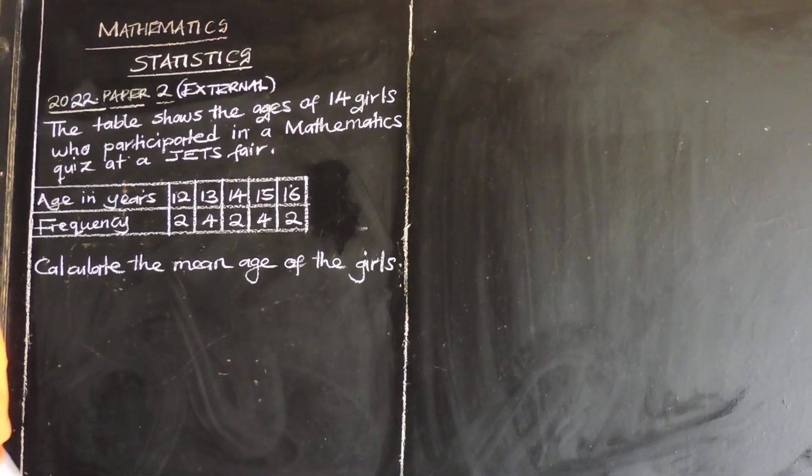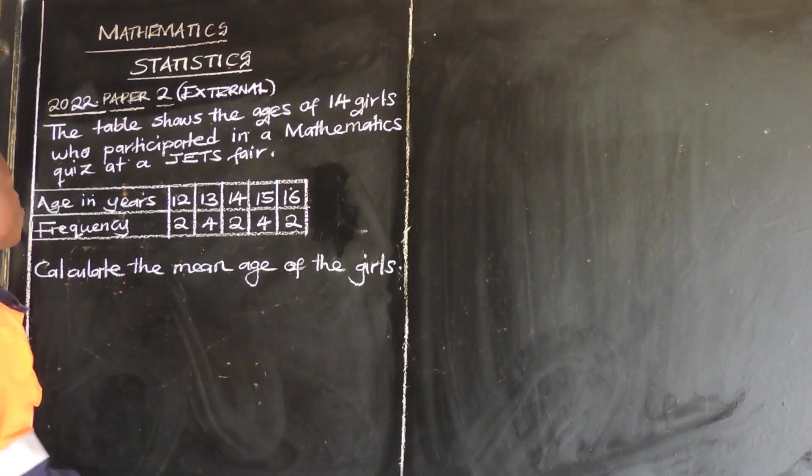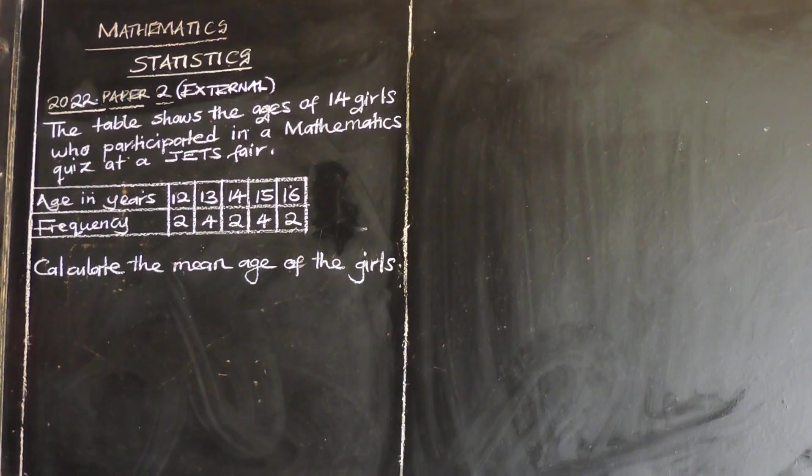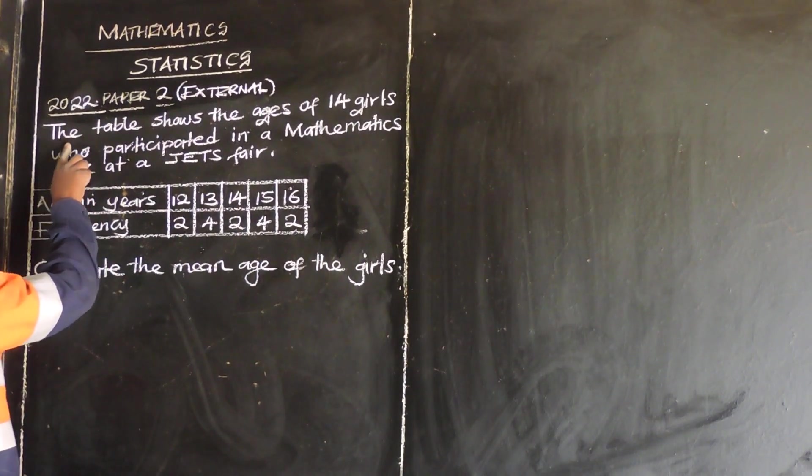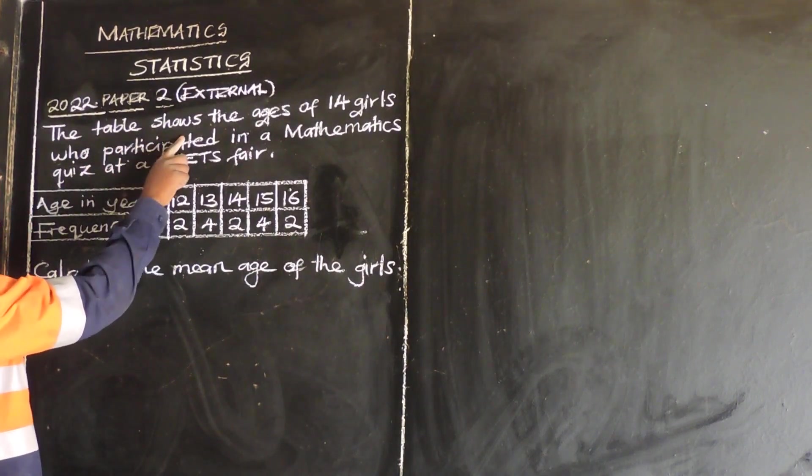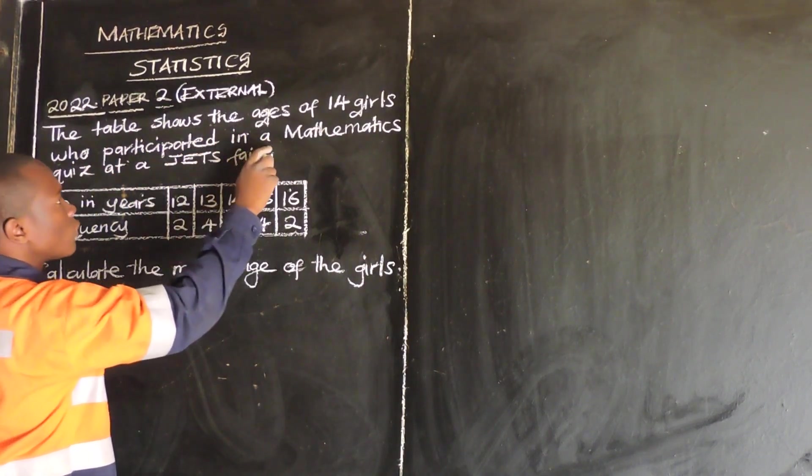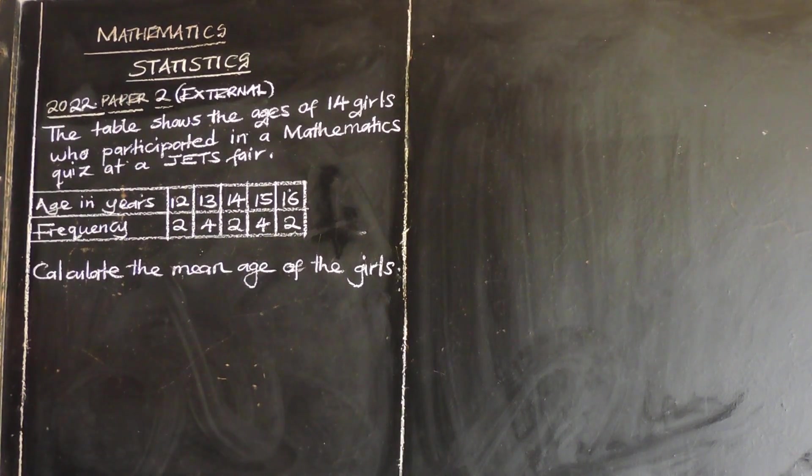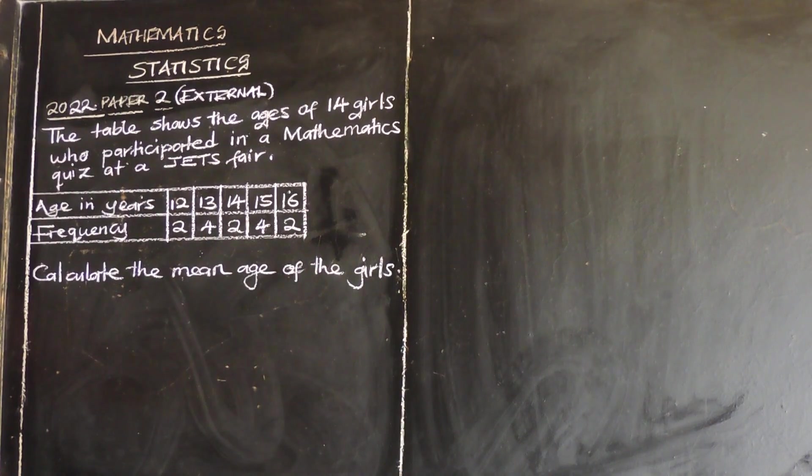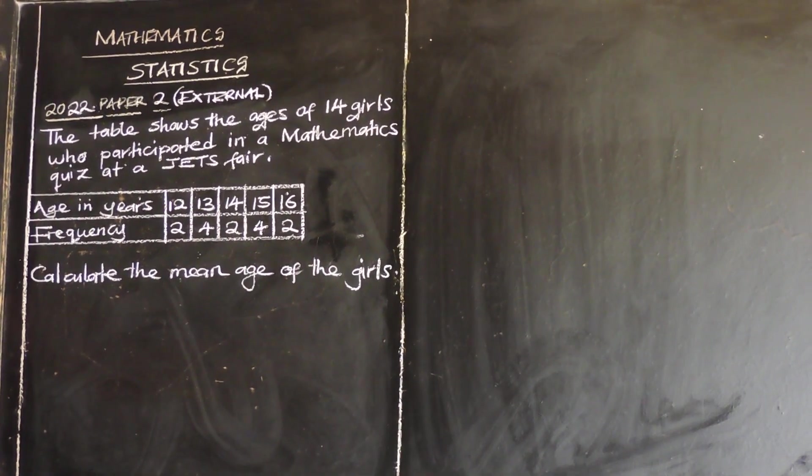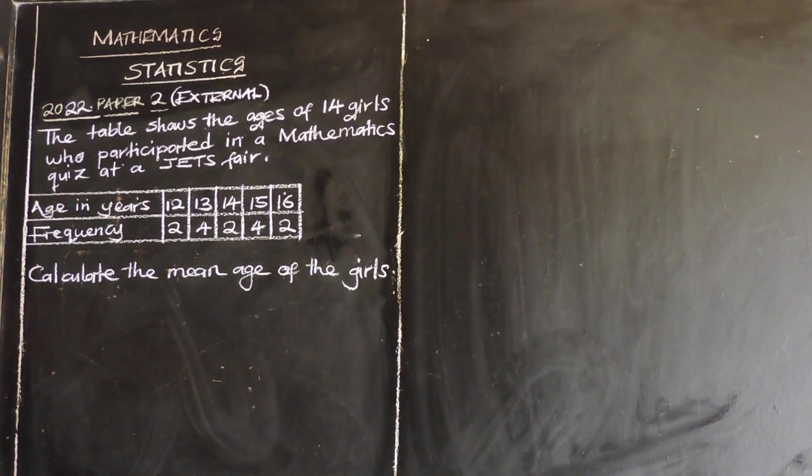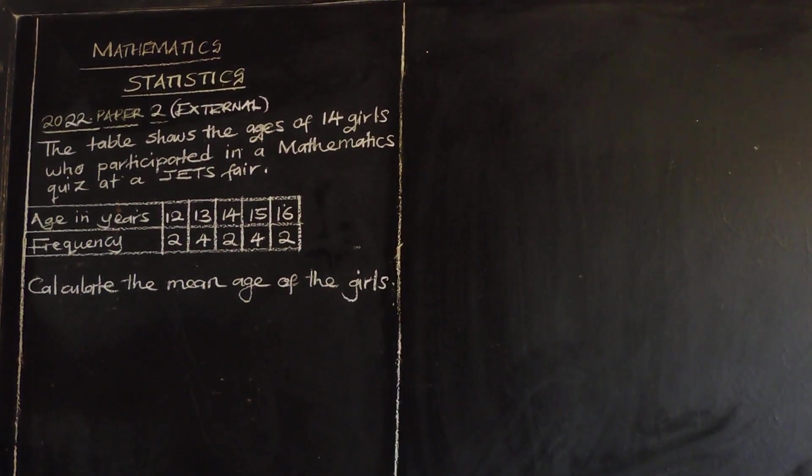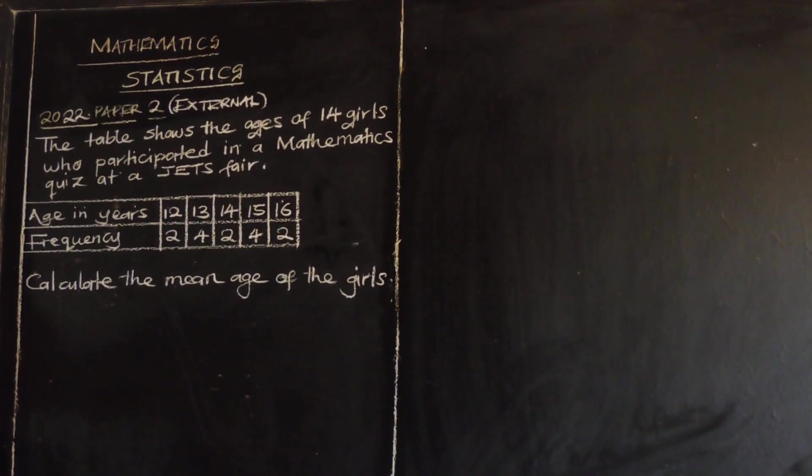So now let us look at the 2022 paper 2 external, that is the equation of statistics. It says the table below shows the ages of 14 girls who participated in a mathematics quiz at a jets fair.